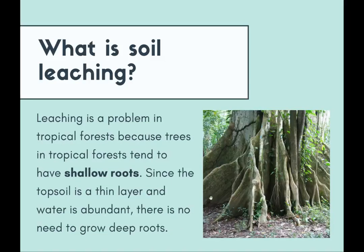Looking at this tree — this is quite common, we see it in Singapore as well — this is what we call buttress roots. Many trees in tropical forests are very tall and huge. If they have shallow roots underground, they cannot support the weight of the trees. That's why trees in tropical forests often have buttress roots on the surface to support the heavy weight. But beneath the surface, their roots are actually very shallow, which explains why leaching is a big problem in tropical forests.